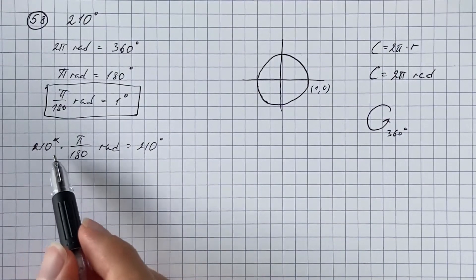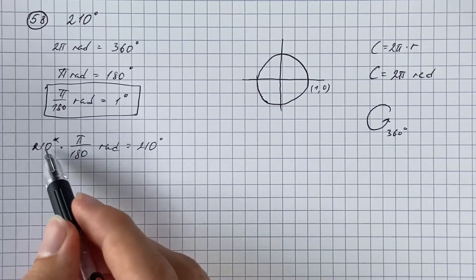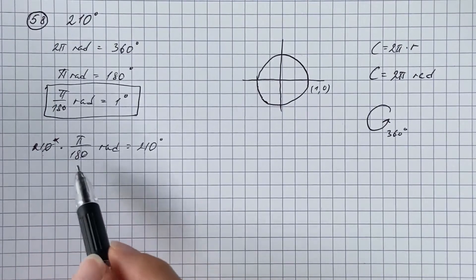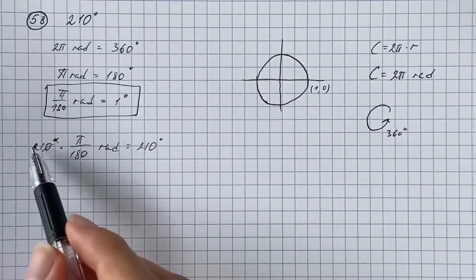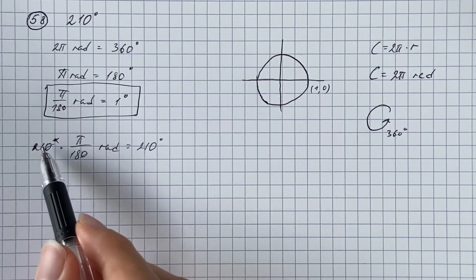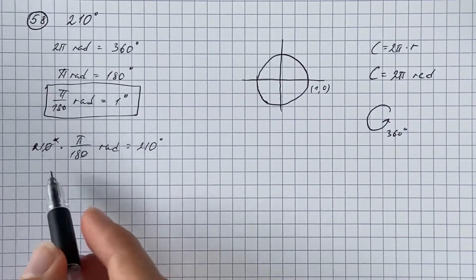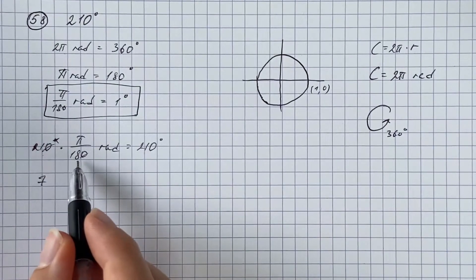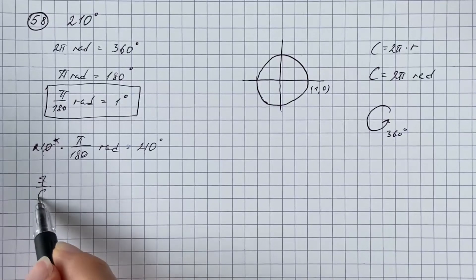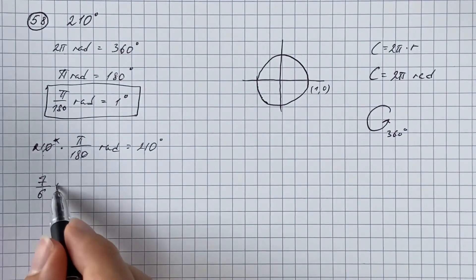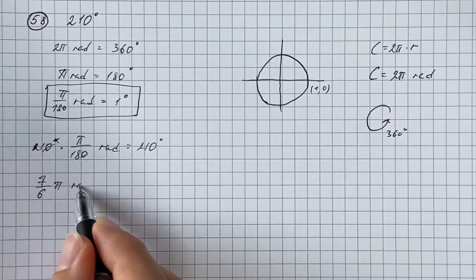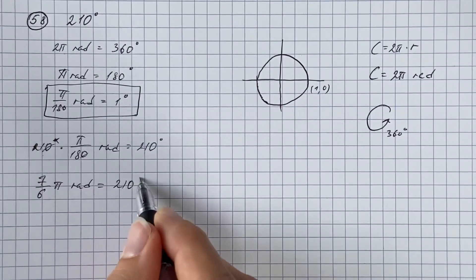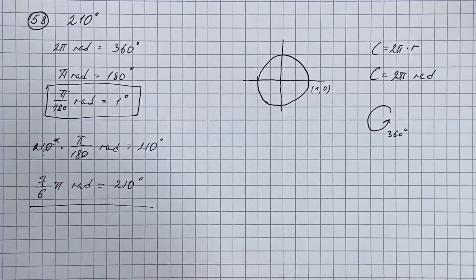We have 210 over 180 — removing the trailing zeros gives 21 over 18. Both divide by 3: 21 divided by 3 is 7, and 18 divided by 3 is 6. So the result is 7π over 6 radians, which is the same as 210 degrees. That's our answer.